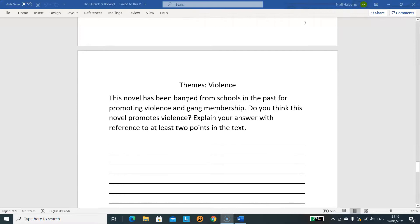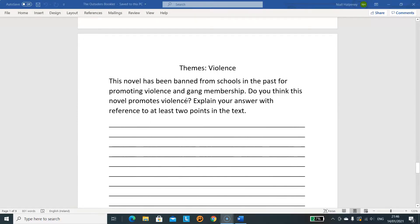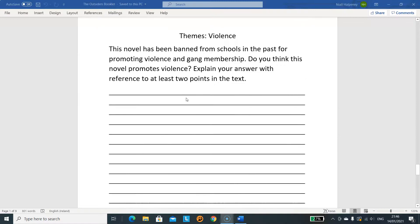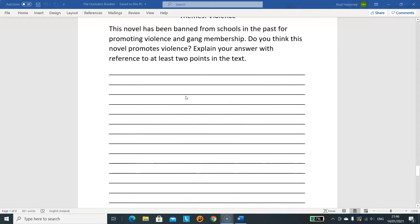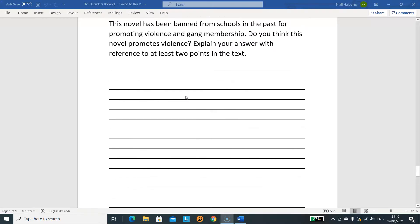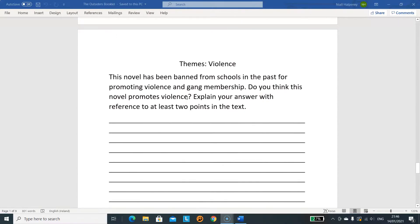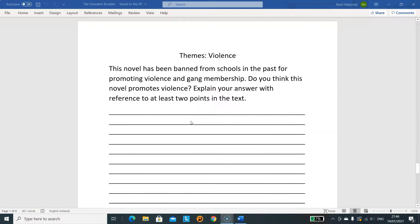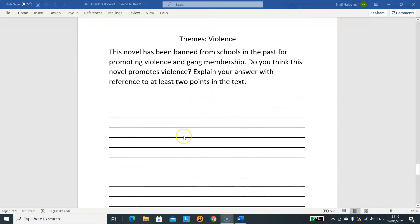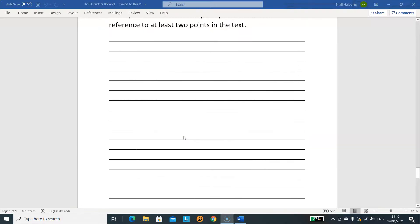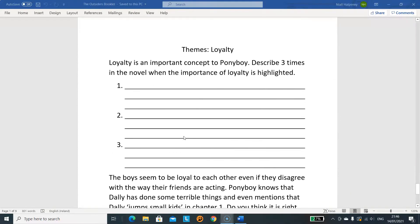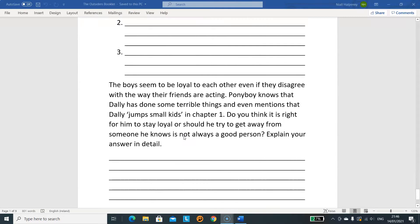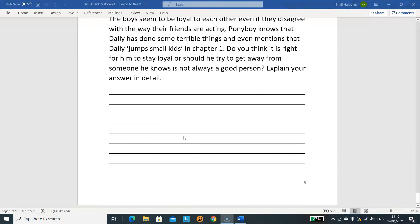Then the last two things are themes of violence. This is a long question I'm going to be looking for here, so I'm not going to be doing this for another week or so. This novel has been banned from schools in the past for promoting violence and gang membership. Do you think this novel promotes violence? Explain your answer with reference to at least two points in the text. This is two extended paragraphs basically. There's a full A4 page of lines here. I want proper detail given in here. And then loyalty: find three times where you see loyalty, and there's a bit of an extended question there, but again, filling up the space that you're given.